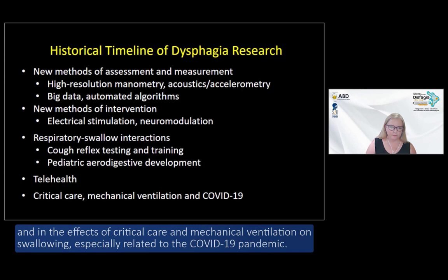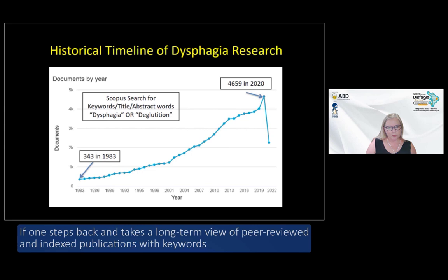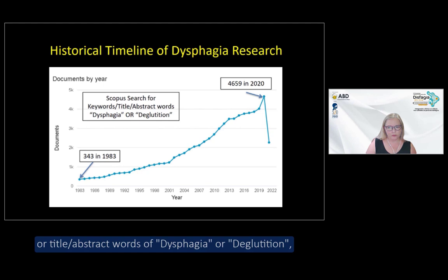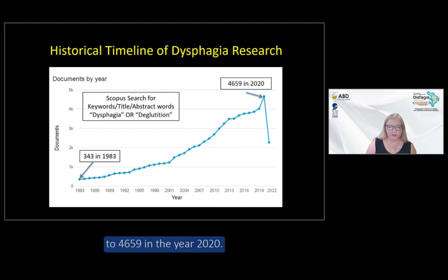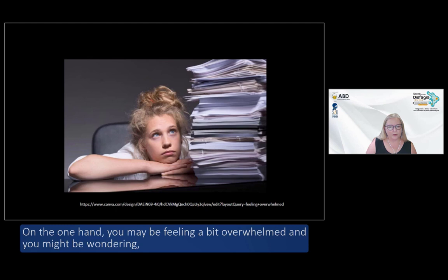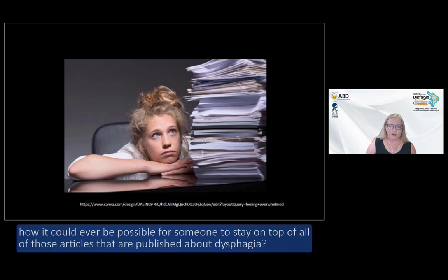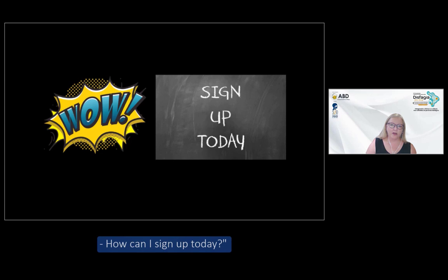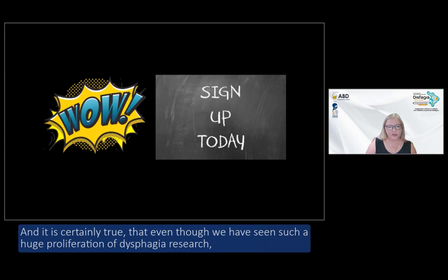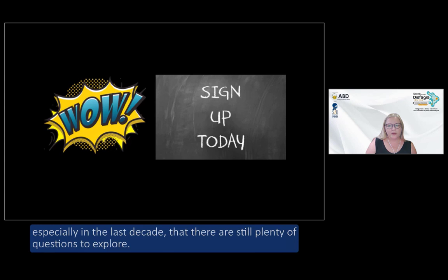If one steps back and takes a long-term view of peer-reviewed indexed publications with keywords of dysphagia or deglutition, our field has experienced a huge 13.6-fold increase — from 343 papers published in 1983 to 4,659 in 2020. This might make you feel overwhelmed wondering how anyone could stay on top of all those articles, or you might feel excited and want to get involved. Even with such a huge proliferation of dysphagia research, especially in the last decade, there are still plenty of questions to explore.